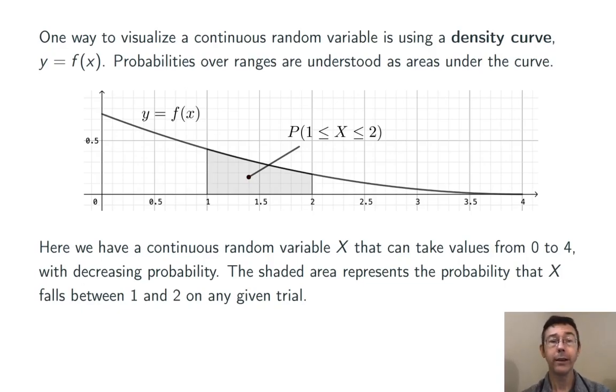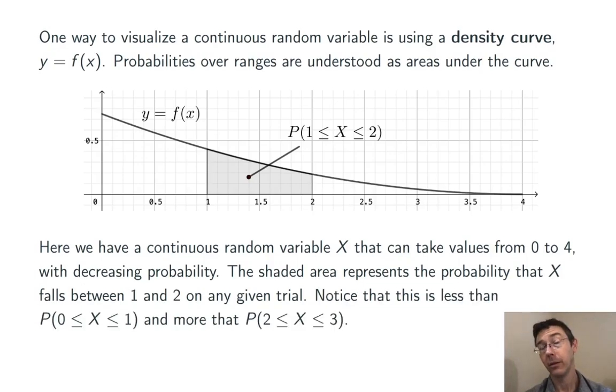Now, just looking at this picture, we can see that the probability that x falls between 1 and 2 is going to be less than the probability that it falls between 0 and 1 because there's more area under this curve from 0 to 1 than from 1 to 2.